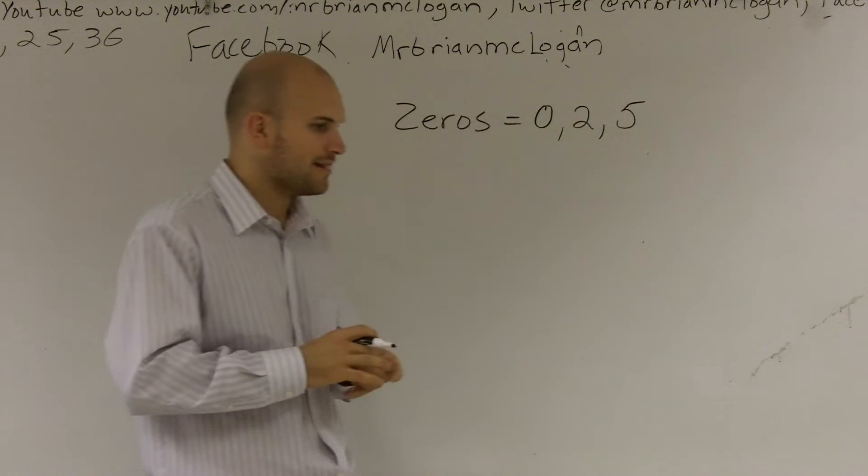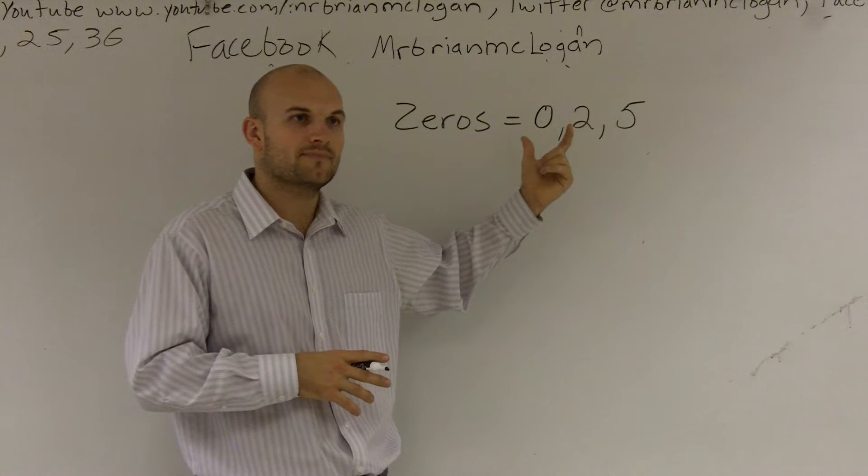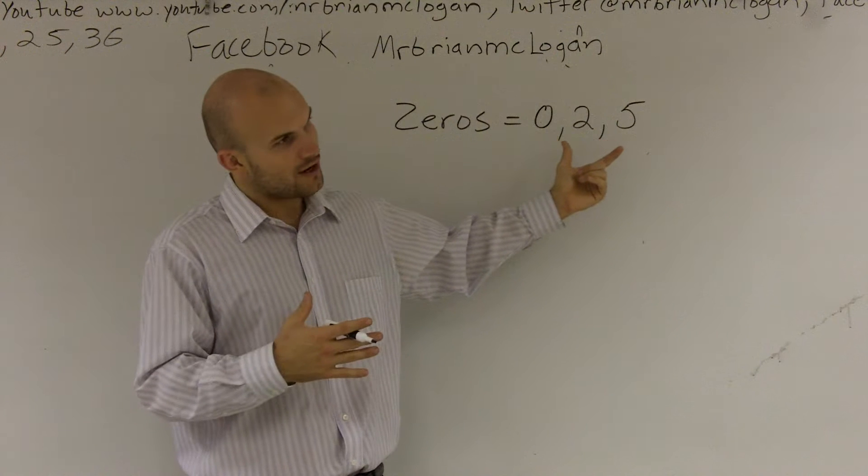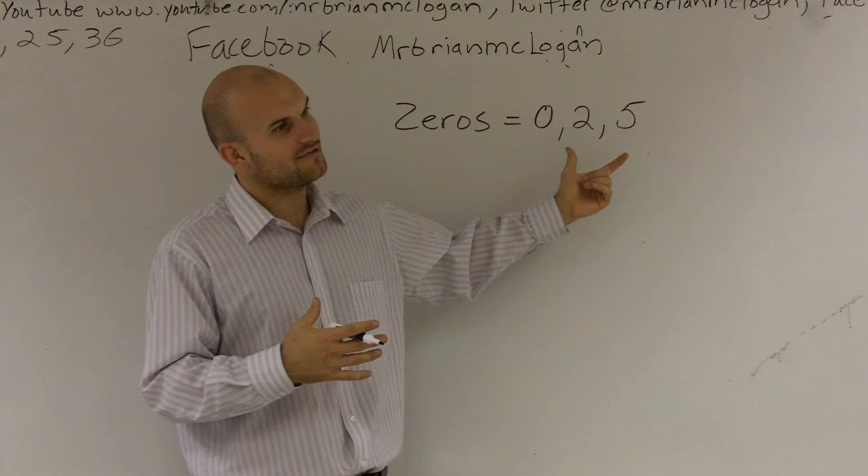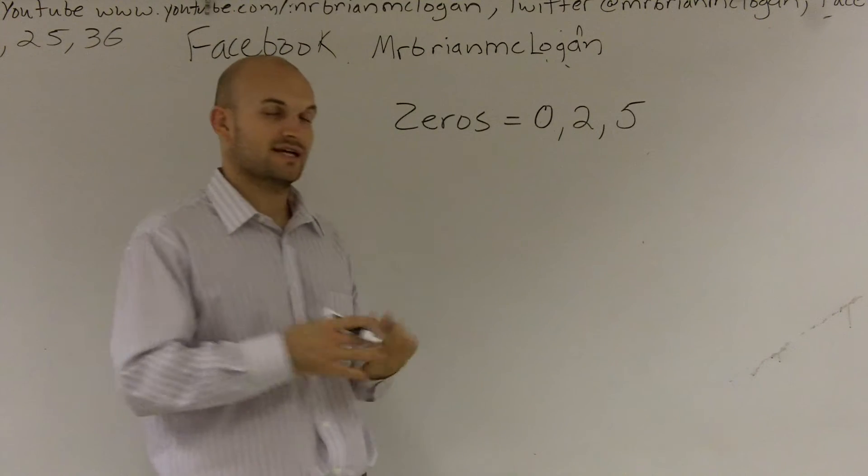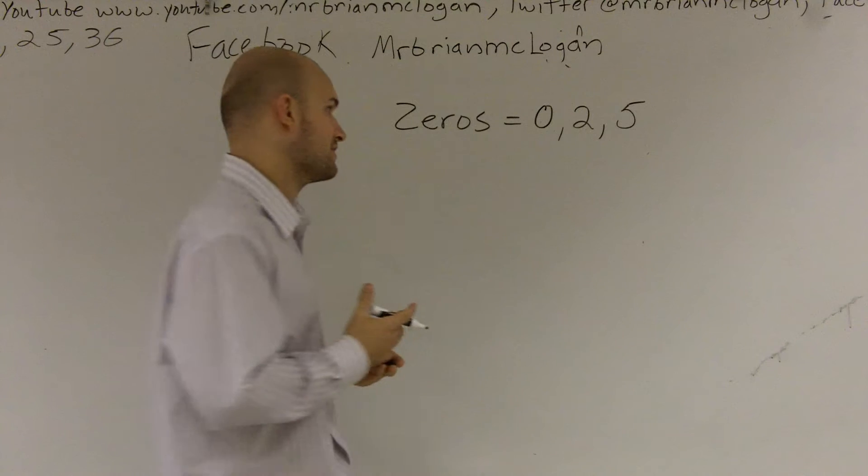A couple things I need to remember is our zeros are where our graph doesn't always cross, so where our graph gives us the output of zero. So it's like our x-intercepts, right? We know we can write our x-intercept also as a set of linear factors.